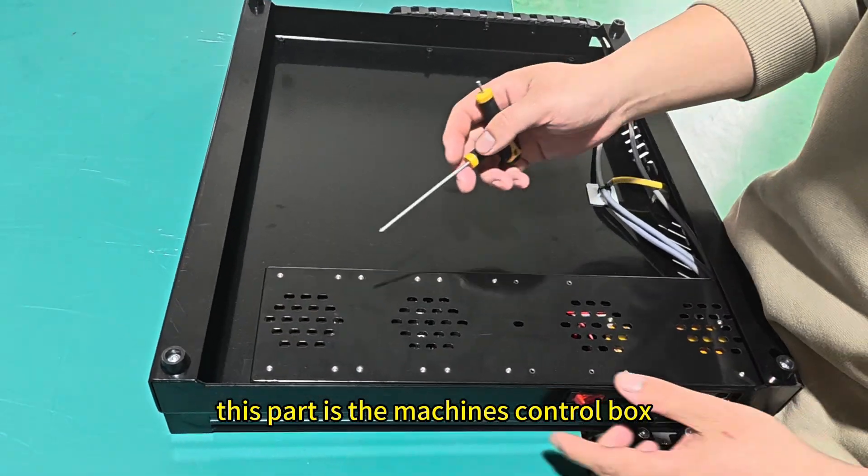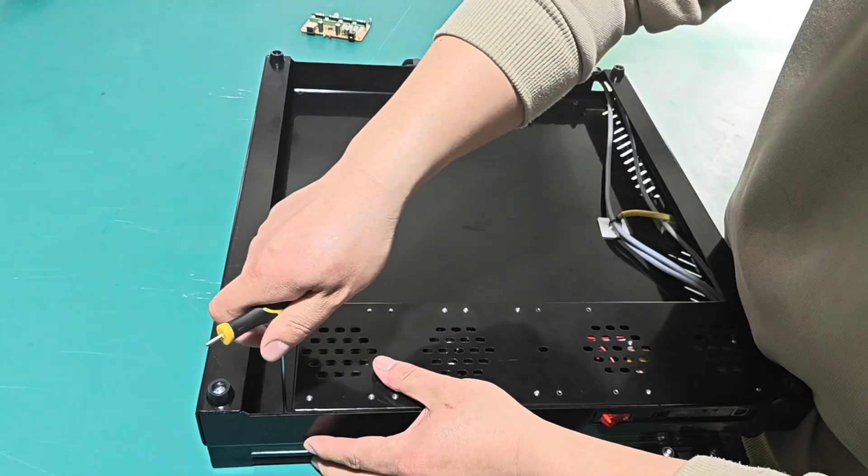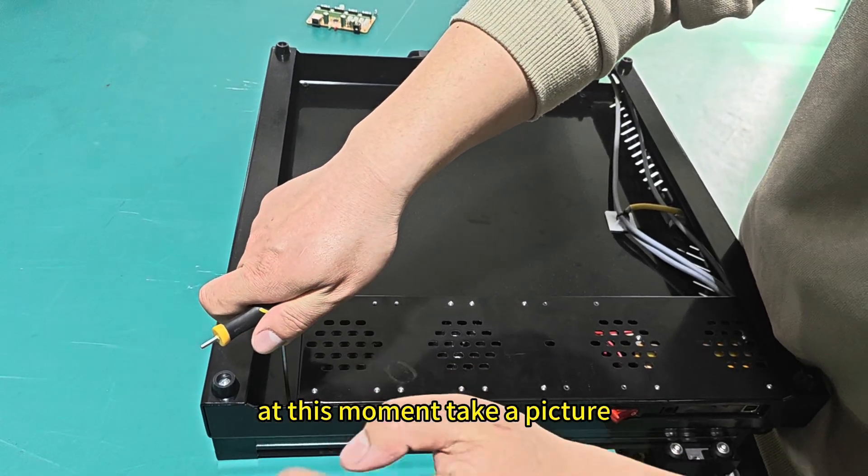This part is the machine's control box, which only requires two screws to secure it. At this moment, take a picture.